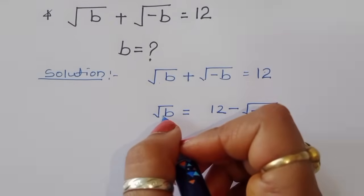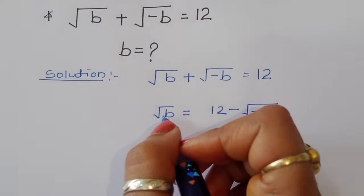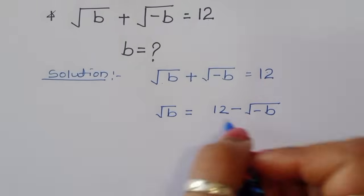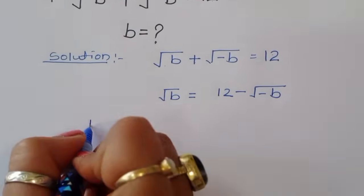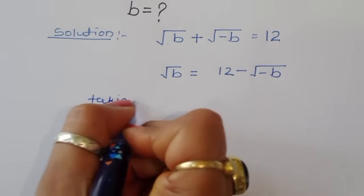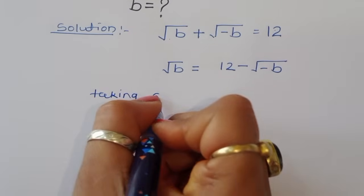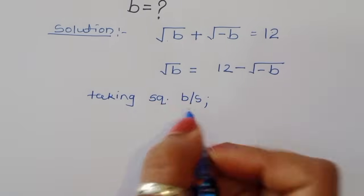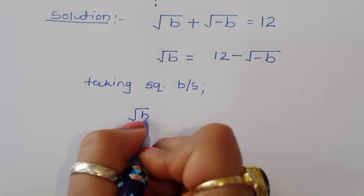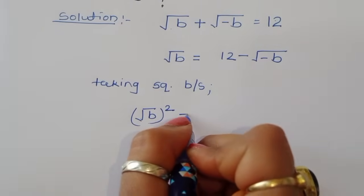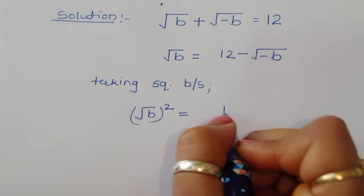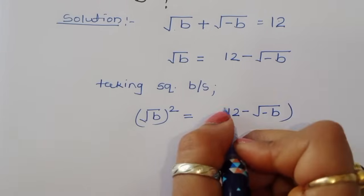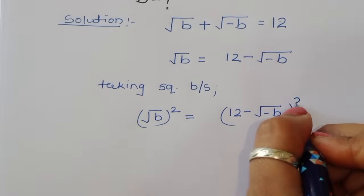Now we have to cancel this square root, so we take the square of both sides. Taking square on both sides, we will get: square root of b, whole square, is equal to 12 minus square root of minus b, whole square.